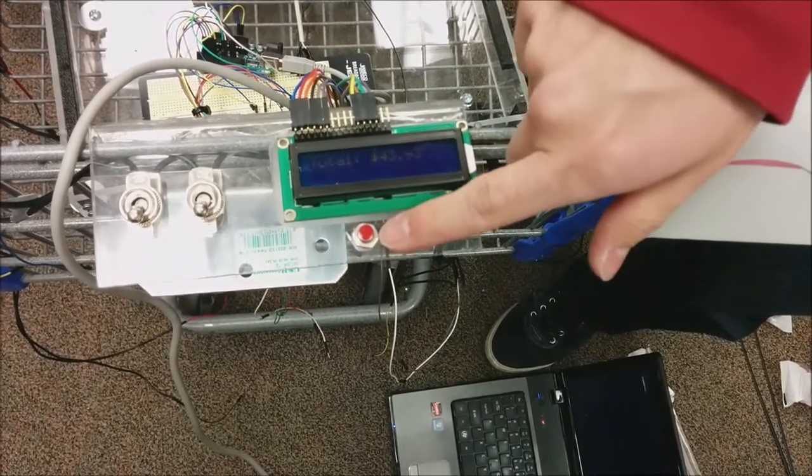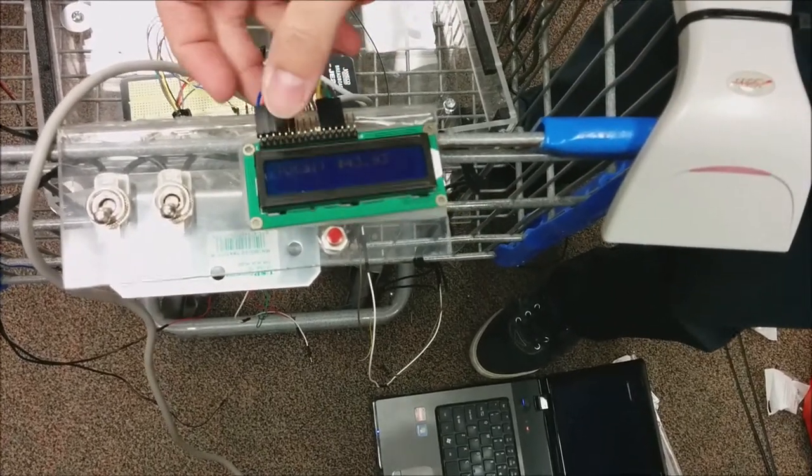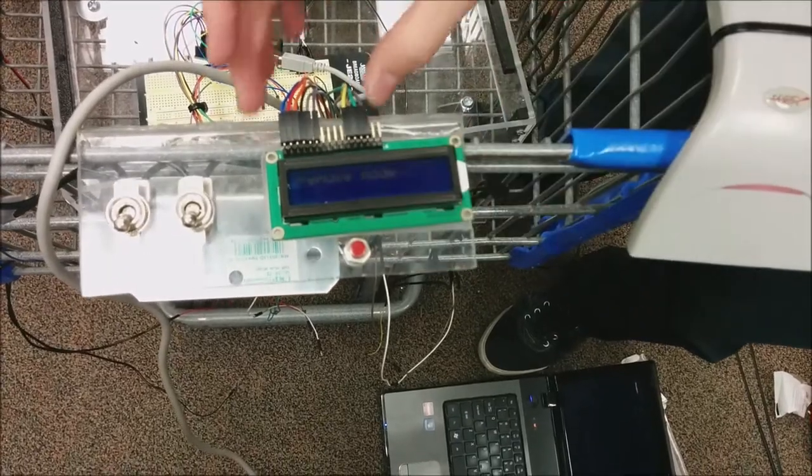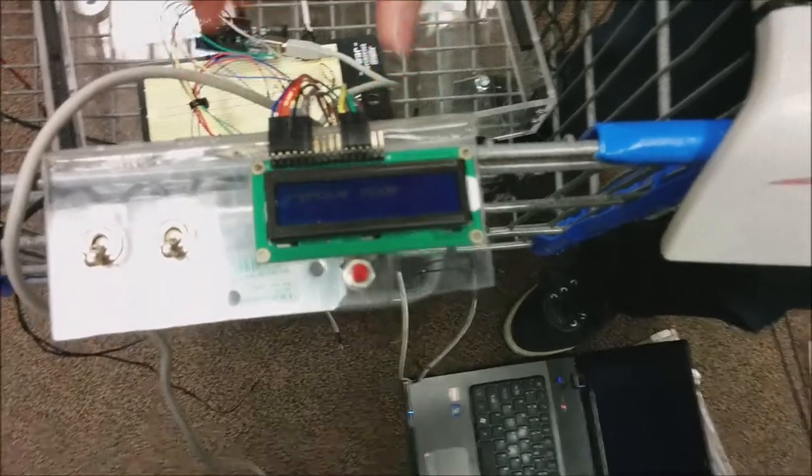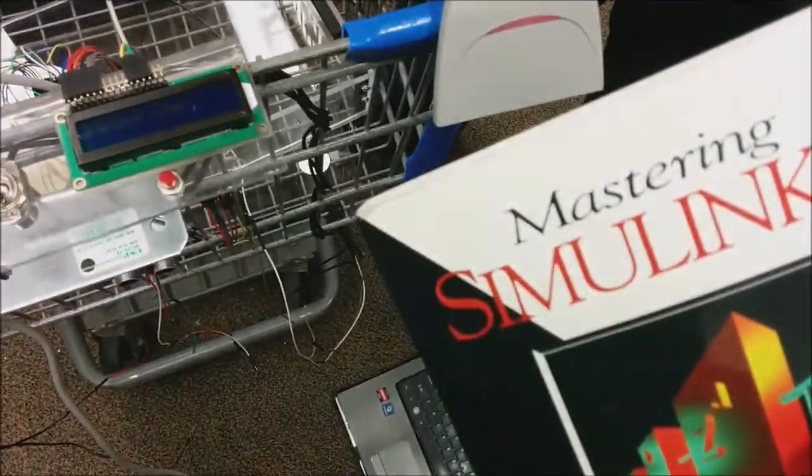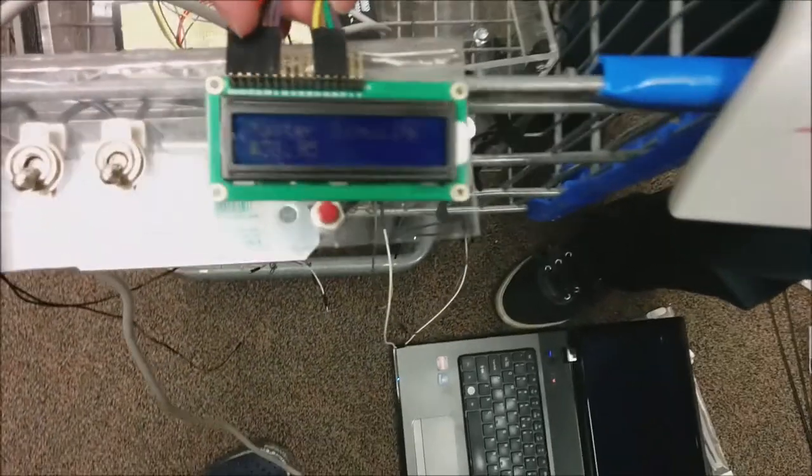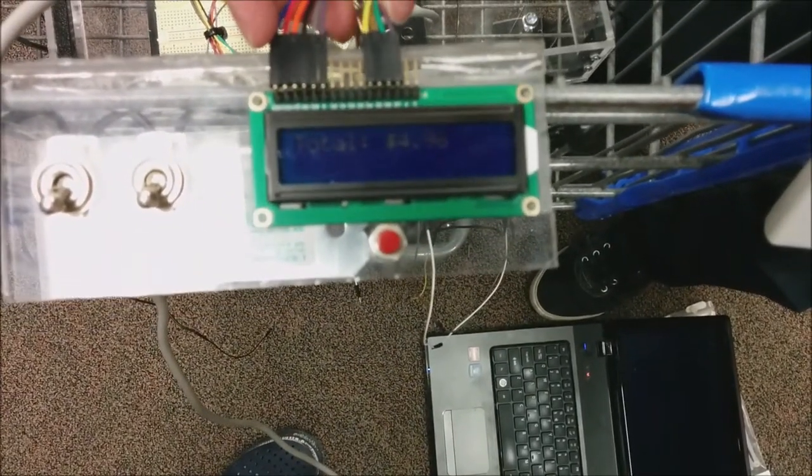We can also use this button to remove an item in case we decide we don't want to buy that anymore. We push this button and it'll say remove mode on the screen. Then I'm going to take the Simulink book again, scan it in, and it'll subtract that price from the total. Now we're back down to $4.